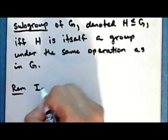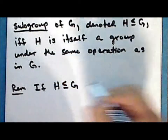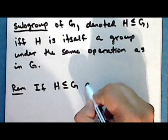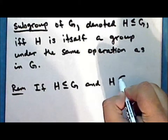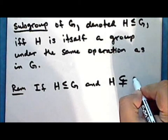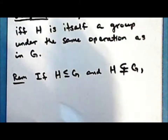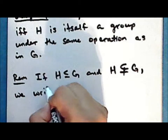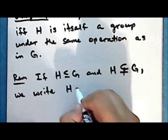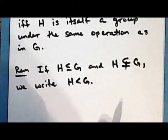If H is a subgroup of the group G, and the underlying set H is a proper subset of the set G, we write H < G. This is read: H is a proper subgroup of the group G.